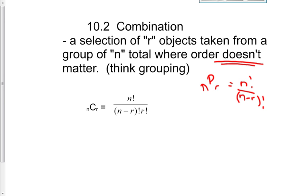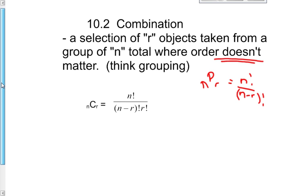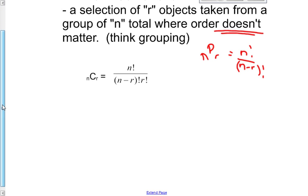In a permutation, the order did matter. Placement was very important. You could only be first. You couldn't get first and third in the same race. That was a permutation from yesterday. Today is combination, order does not matter. Our notation this time is nCr, and the formula is n factorial over n minus r factorial times r factorial.